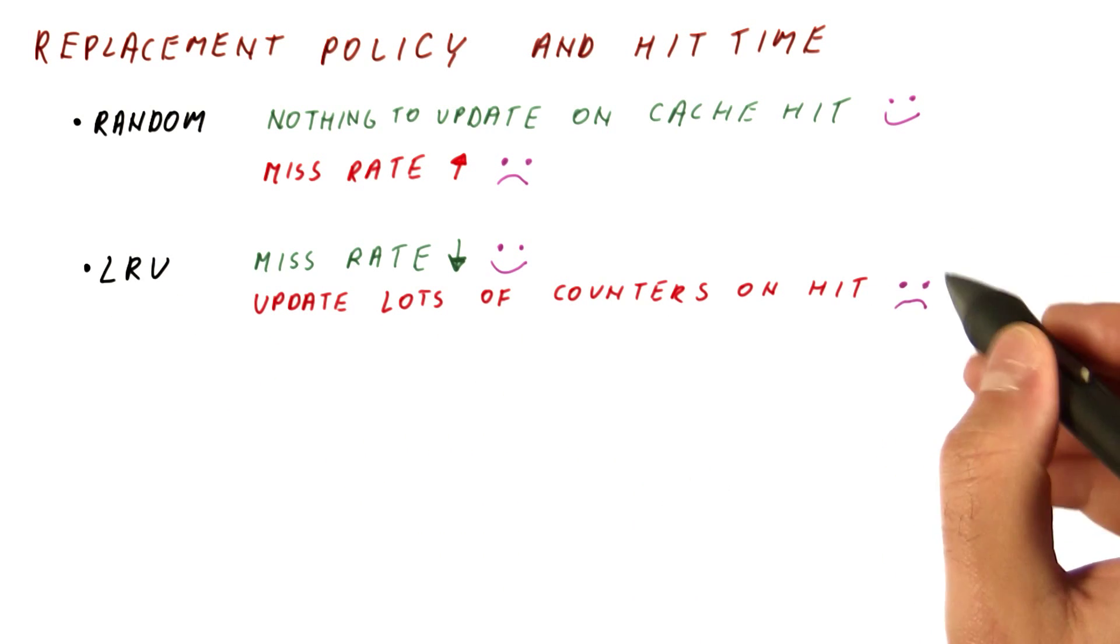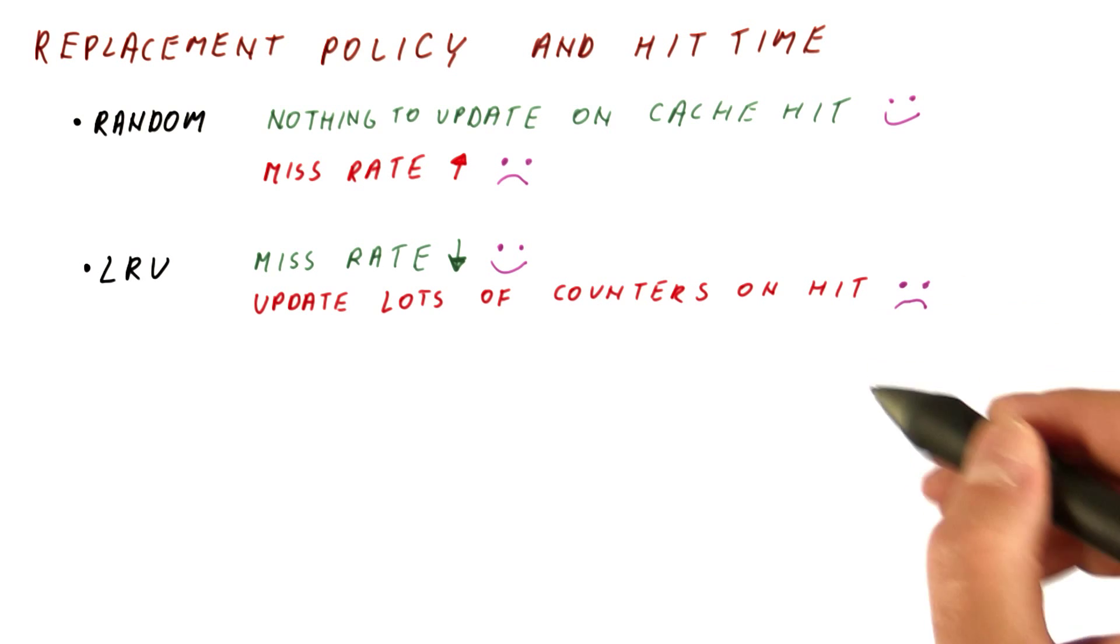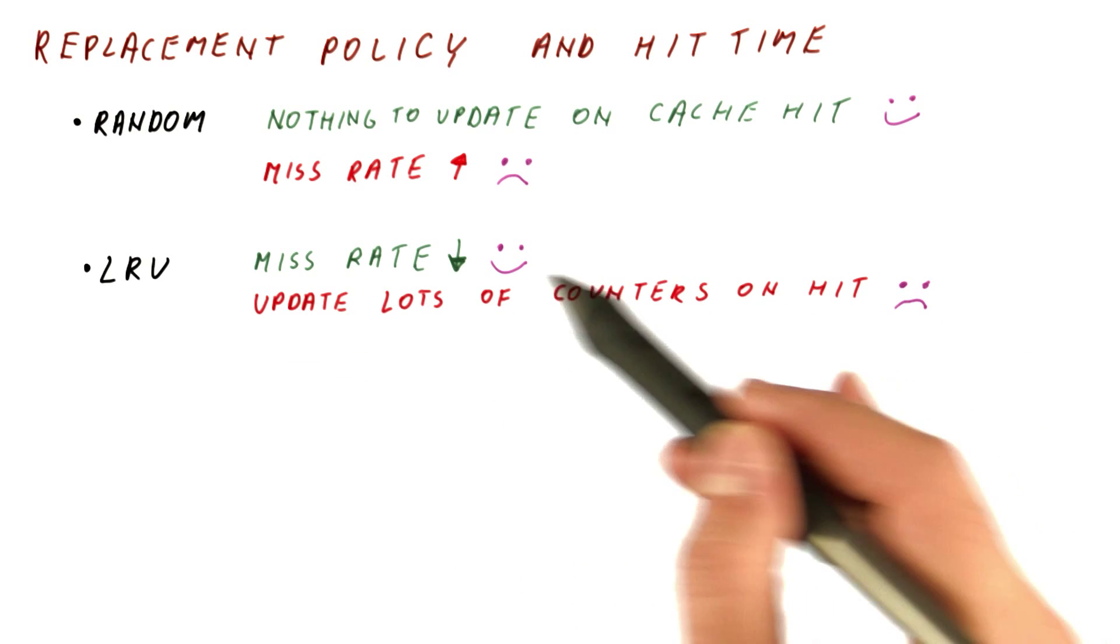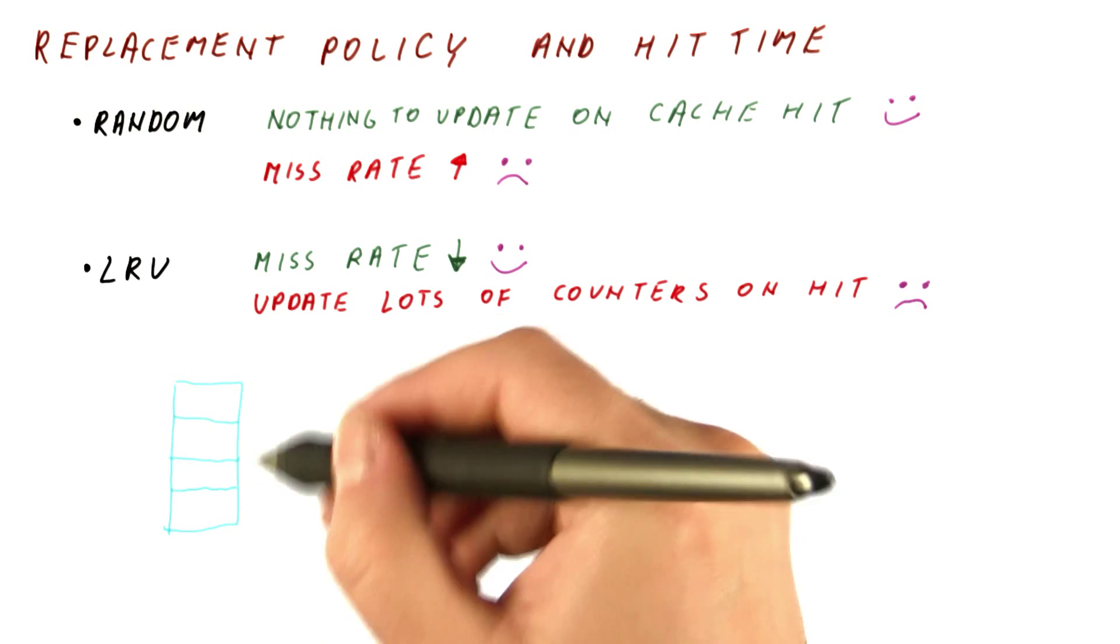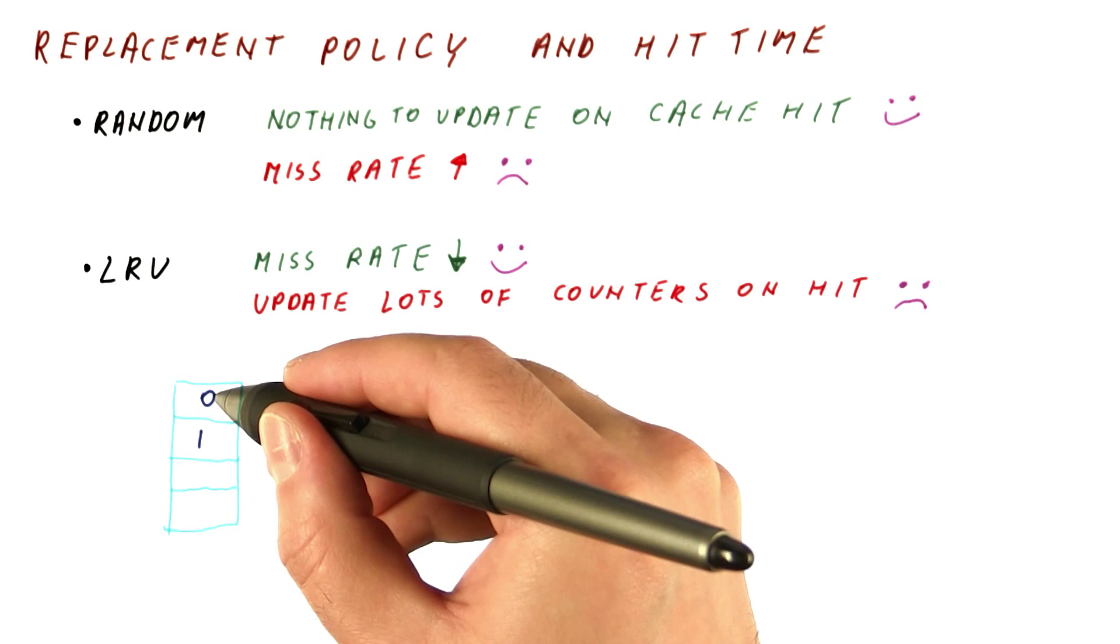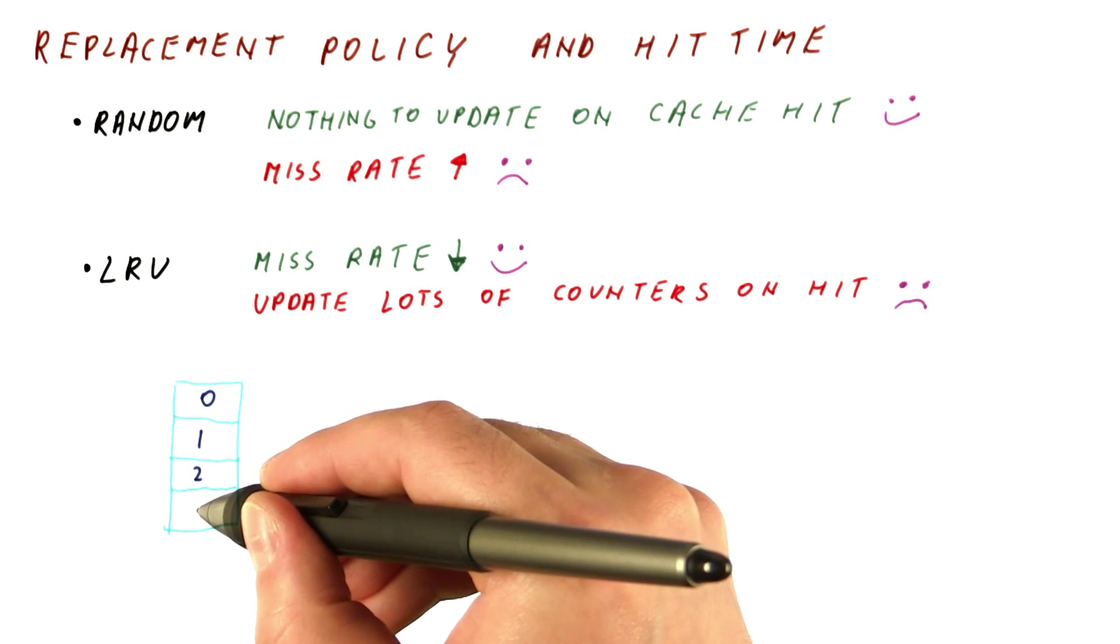And this spends a lot of power, and also results in slower hits. To illustrate what happens on a cache hit using LRU, let's look at the four-way set associative cache whose counters are currently 0, 1, 2, and 3.